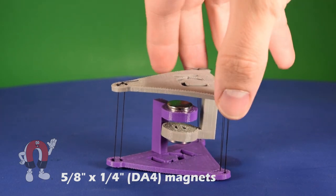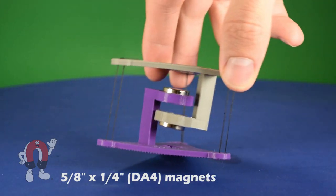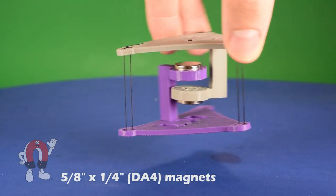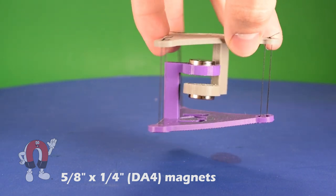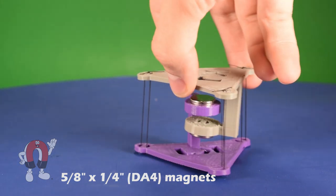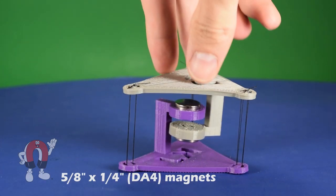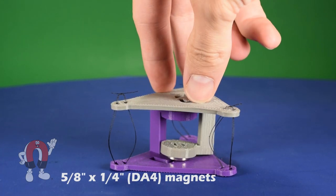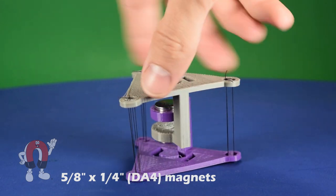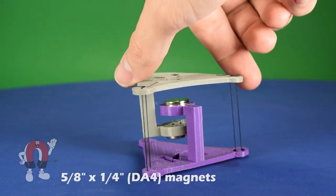Here's an example of the same table but with attracting magnets replacing the center string. Two strong disc magnets attracting towards one another across the gap provides a force that pulls up the top half of the table. We used 5/8 inch diameter by 1/4 inch thick discs.